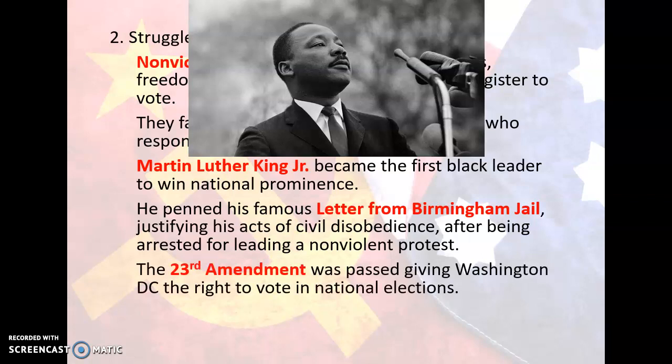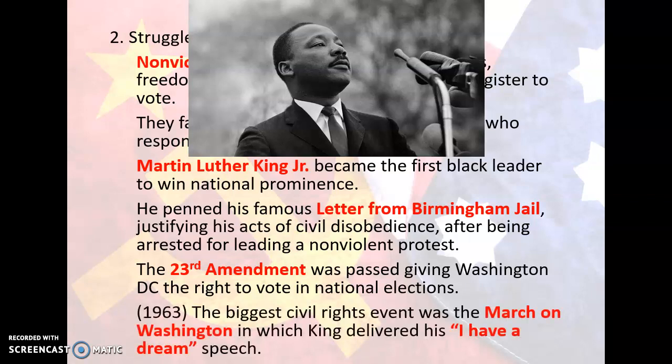The 23rd Amendment was passed. It gave Washington, D.C. the right to vote in national elections, because D.C. is not a state — up to that point it was not allowed to vote in national elections. Because Washington, D.C. was heavily black, the amendment was regarded as a step forward in civil rights. Probably the climax of the civil rights movement in the 1960s was in 1963: the biggest civil rights event was the March on Washington, in which King delivered his famous I Have a Dream speech. The event was to rally support for proposed civil rights legislation, and about a quarter of a million black and white Americans participated. In his speech, King spoke of an ideal America where liberty and equality would be a reality for people of all ethnicities.